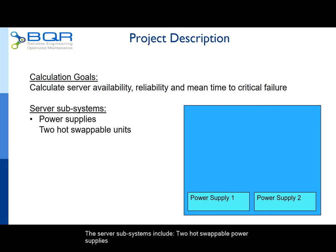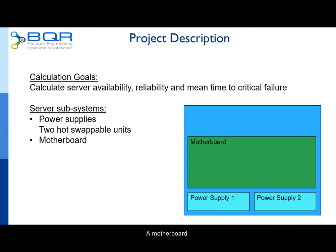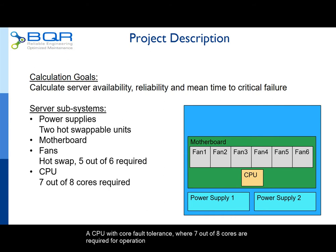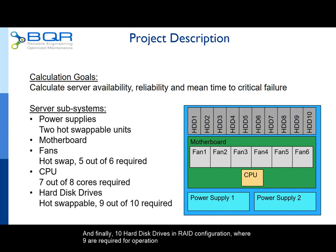The server subsystems include two hot swappable power supplies, a motherboard, 6 hot swappable fans where 5 are required for operation, a CPU with core fault tolerance where 7 out of 8 cores are required for operation, and 10 hard disk drives in RAID configuration where 9 are required for operation.